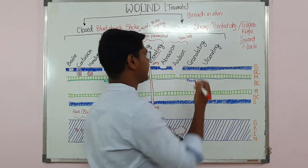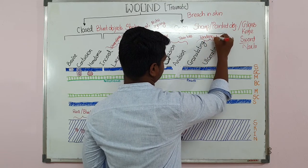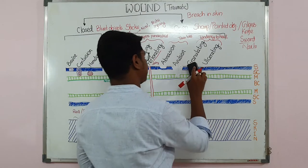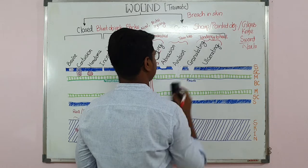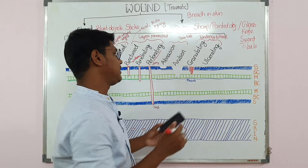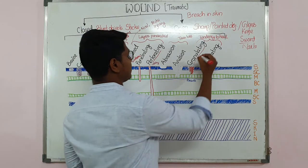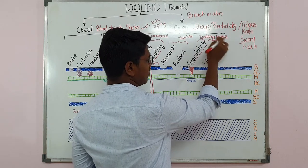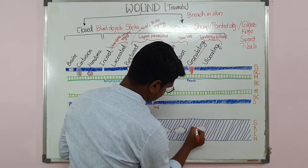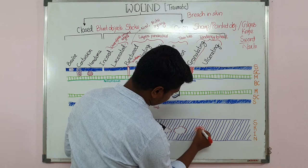Next, the granulating and ulcerating wounds are classified on the basis of tendency to heal. The granulating wound is also known as a healing wound. If you find any granulation tissue — which is usually red or bright pink in color — the wound is healing. That is why it is known as granulating.